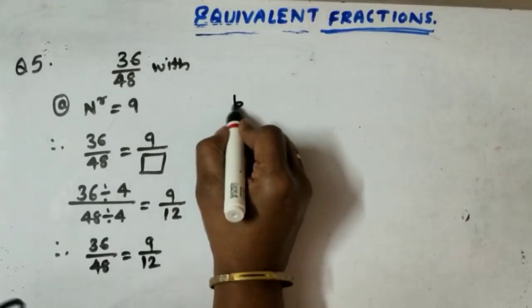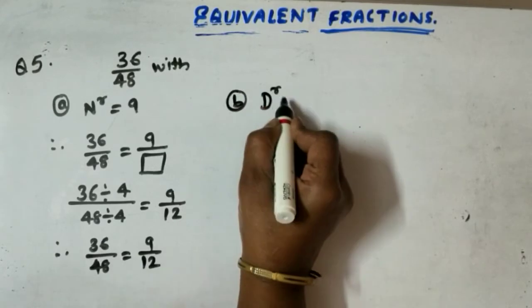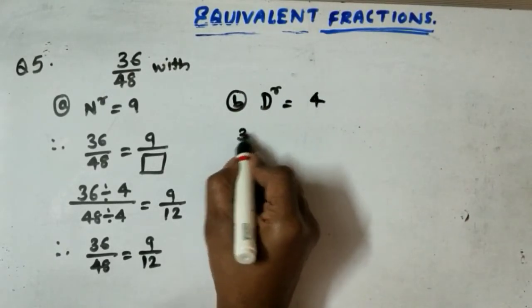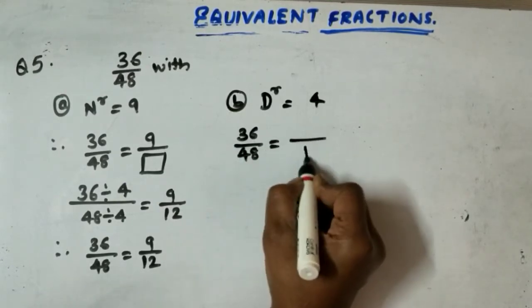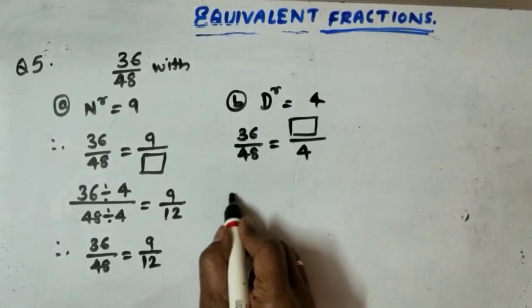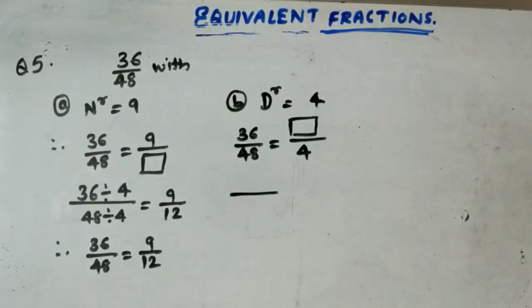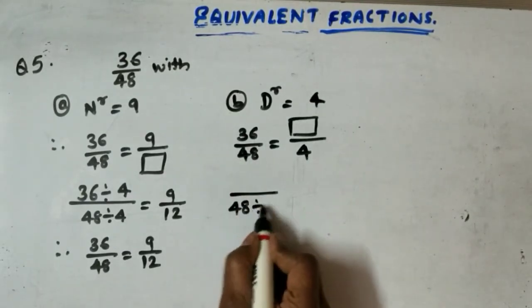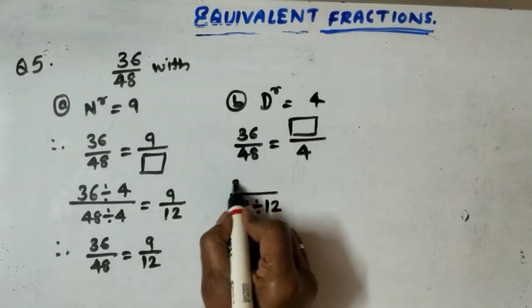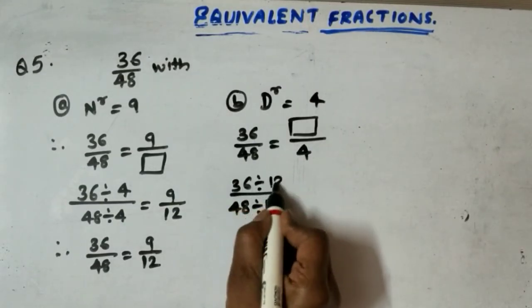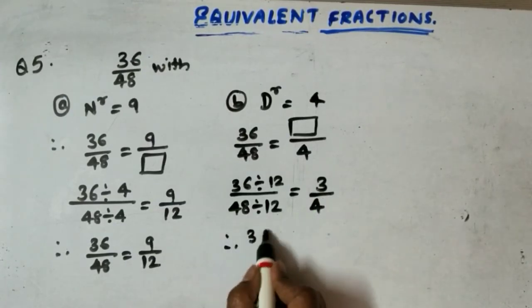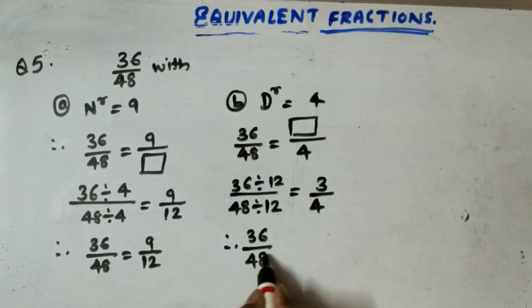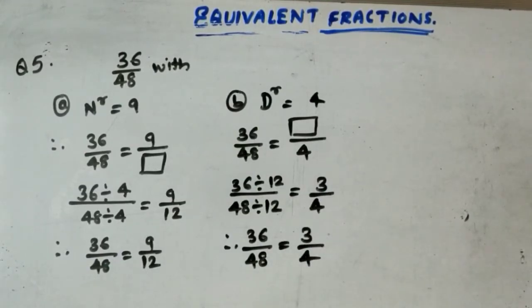Next question B. They have told us denominator 4. We are having fraction 36 by 48. Denominator 4 means here 4, here box. See the relation between 48 and 4. So 48 divided by 12, so here also 36 divided by 12. 12 threes are 36, 12 fours are 48. Therefore, 36 by 48 is equal to 3 by 4. Hope your concepts are clear.